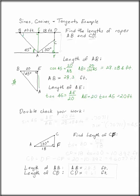Double check your work. You can also use the sine function. Sine of 45 is opposite over hypotenuse, AE over AB.